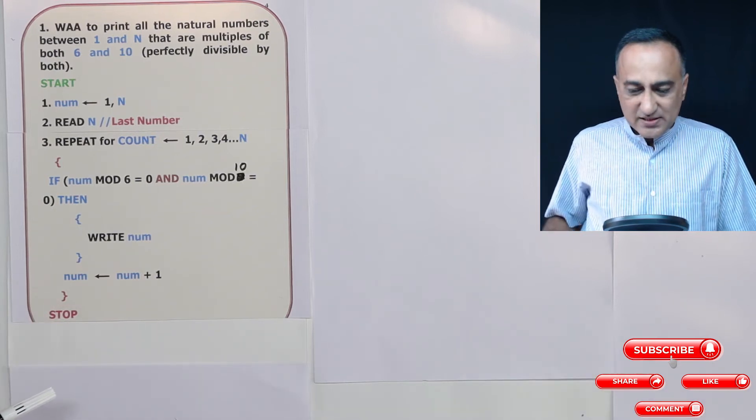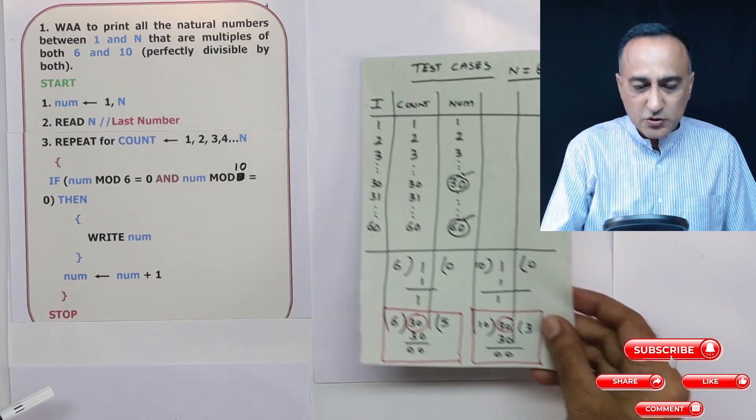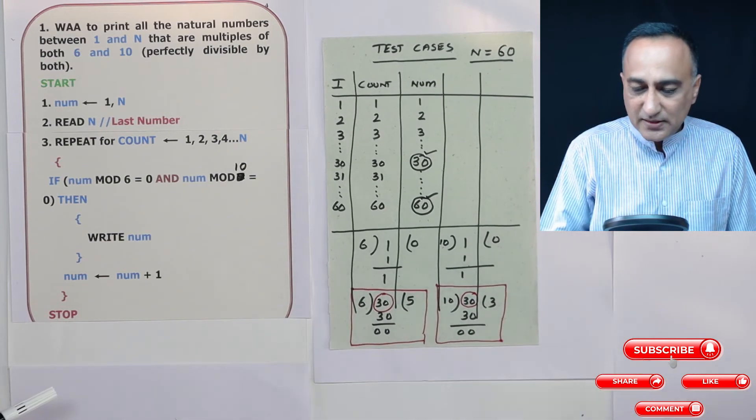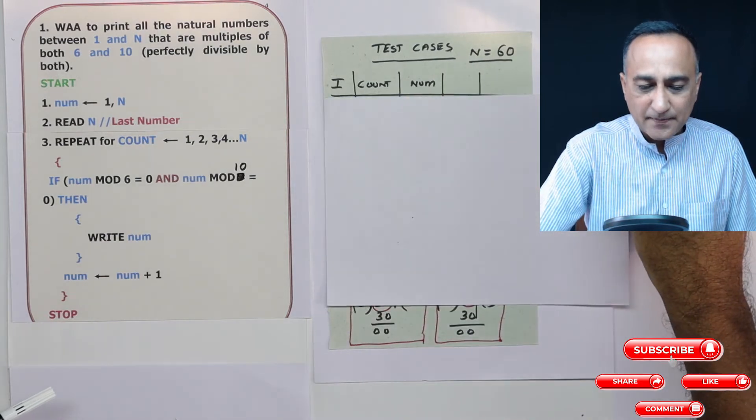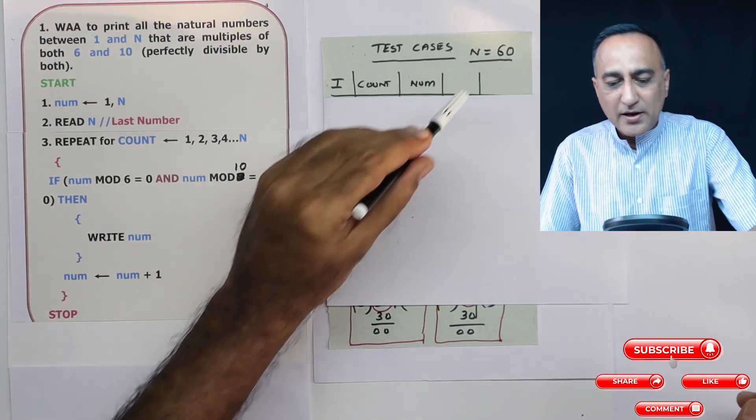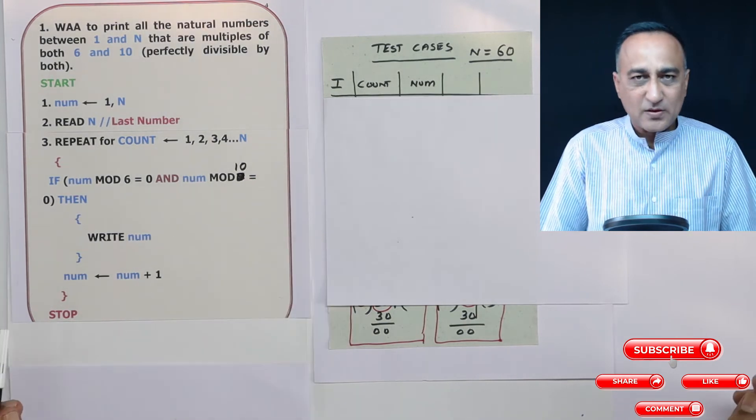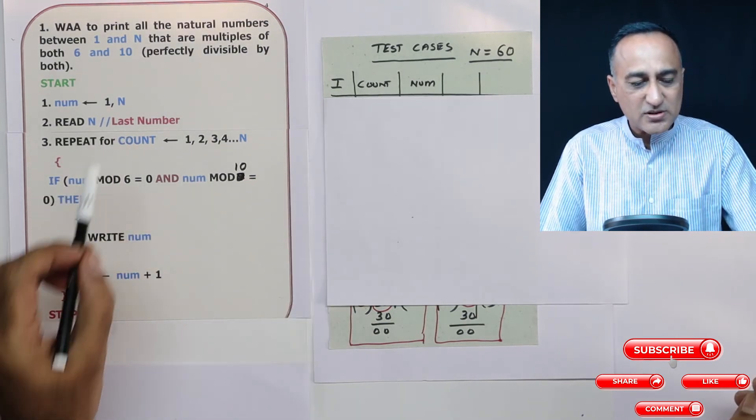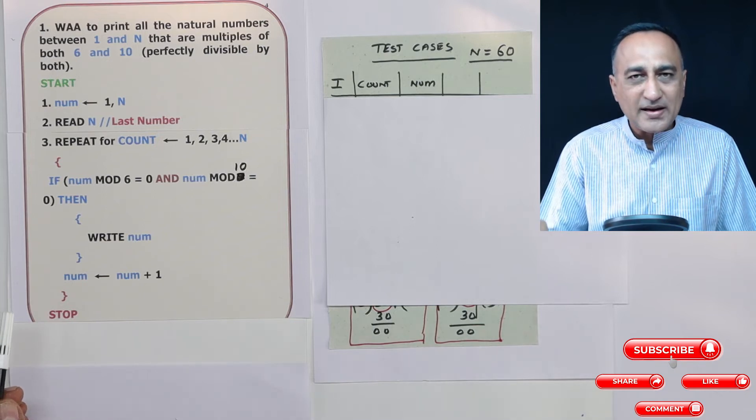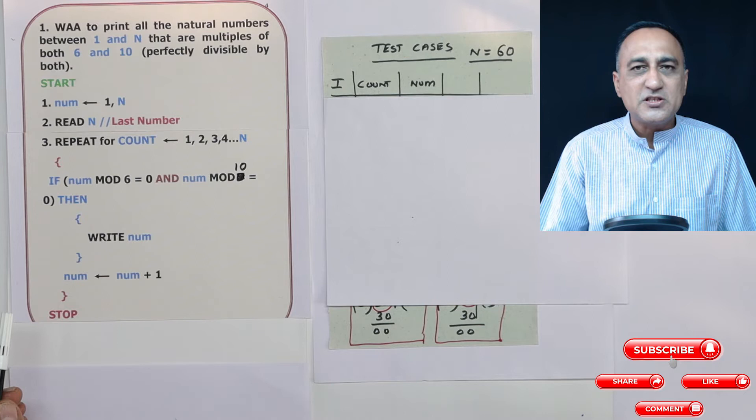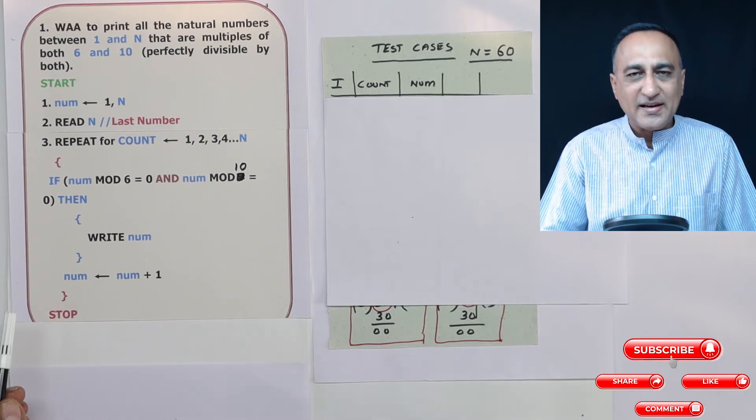In order to understand this problem, as usual, we will take a look at the working through a test case or test plan. So let's say the value of n is 60. That means I've asked the user, and the user says I want to find all numbers between one and 60 which are perfectly divisible by both 6 and 10.